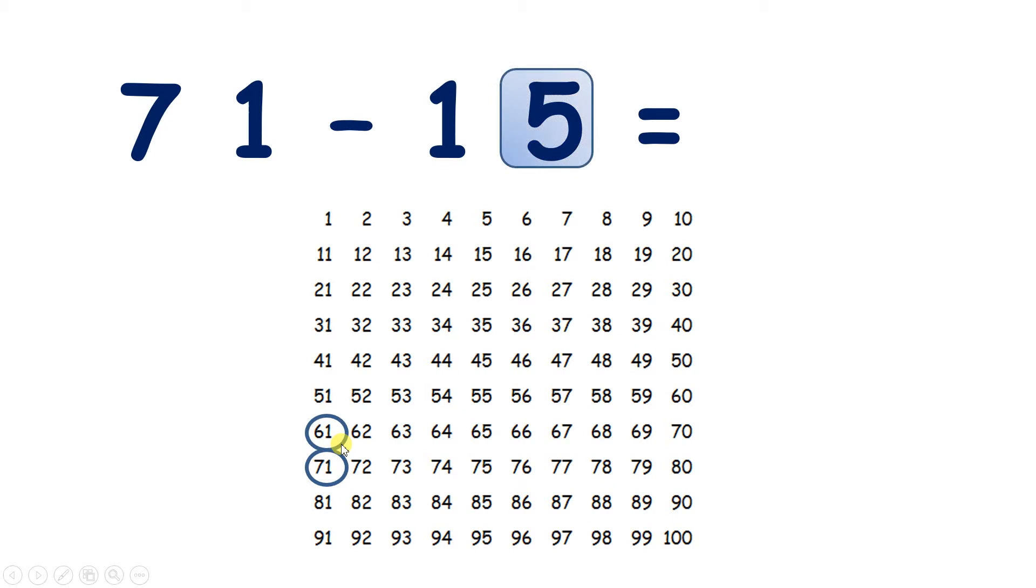And now we need to subtract five units. So with subtraction, we move to the left. And here we can't move to the left, so we go up to the end of the previous line. So we can subtract one, two, three, four, five.